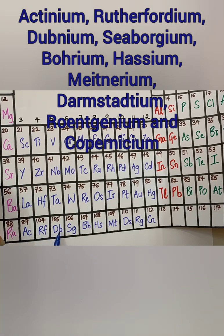The elements are, actinium, rutherfordium, dubnium, seaborgium, bohrium, hassium, meitnerium, darmstadtium, roentgenium, copernicium.